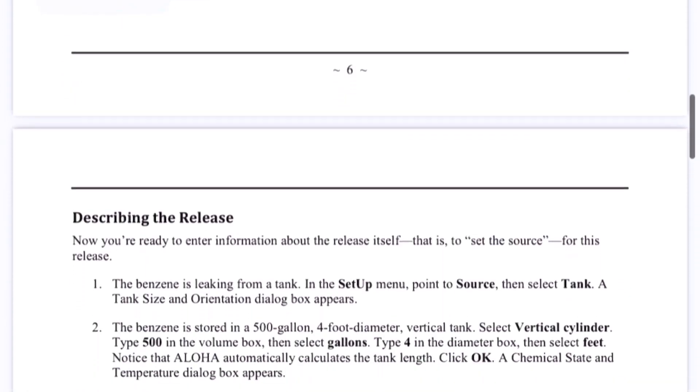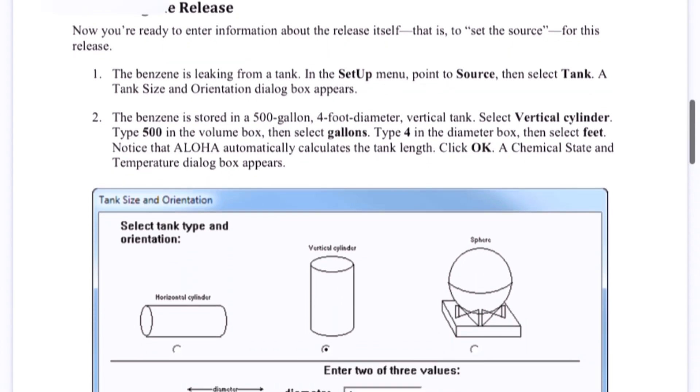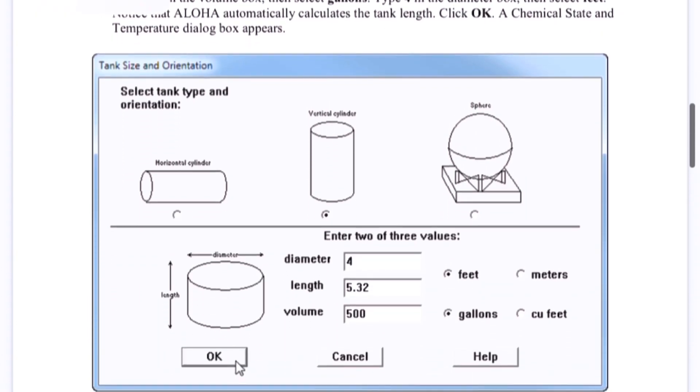So further to it, describing the release - what it means is what type of storage we are having, whether it's vertical, horizontal, or square. So based on your location or your storage type, you have to select. Then the next step would be the dimensions.